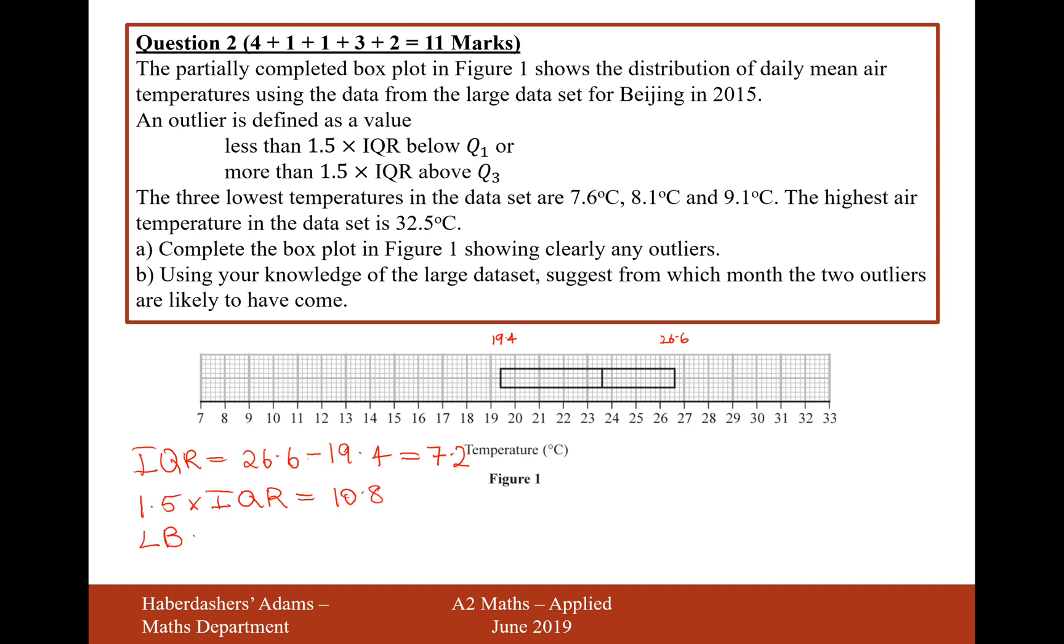So effectively, the lower bound is going to be 19.4 minus 10.8. That's the lower bound for the outliers. So 19.4 minus 10.8, and that gives us 8.6.